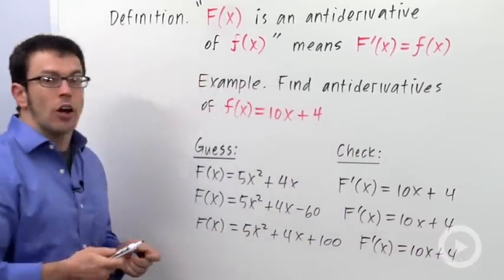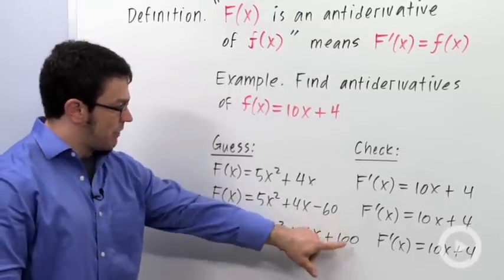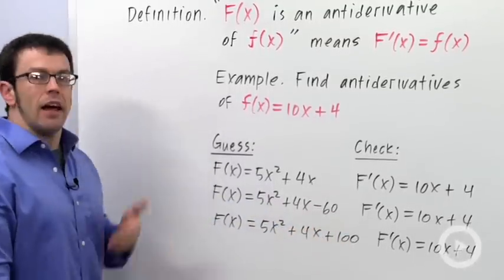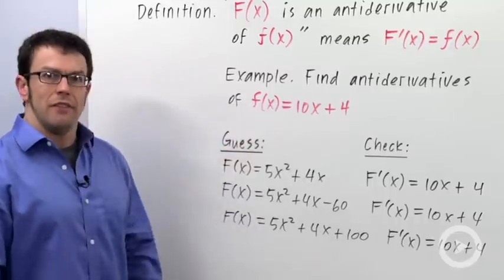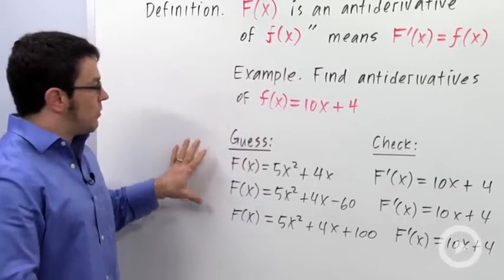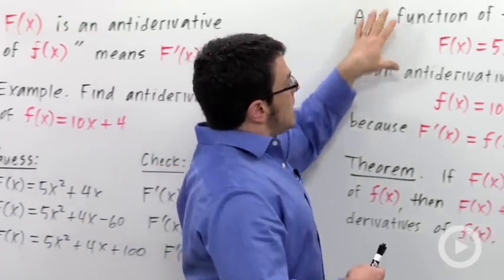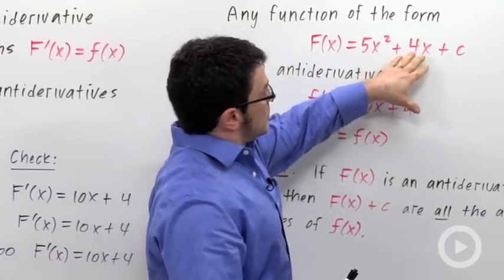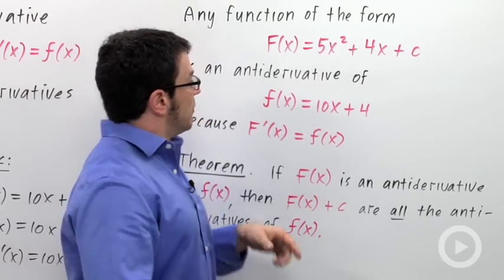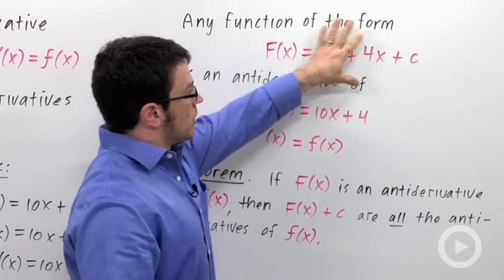Now, you could see I could go on and on like this forever. I could keep coming up with functions and just putting in different values for this constant. And I'll have lots and lots of antiderivatives of 10x plus 4. But that's not generally the way we write our answer. We write our answer in a nice condensed form. Any function of the form 5x squared plus 4x plus c is an antiderivative of the function 10x plus 4. So this is the way we generally write our answer.